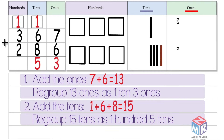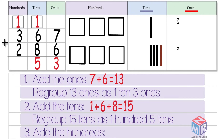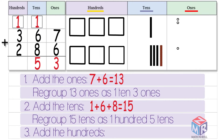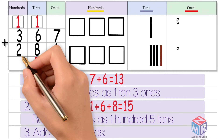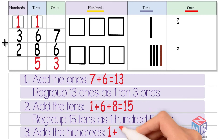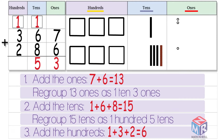Next, we add the hundreds. One plus three plus two is equal to six. So 367 plus 286 is equal to 653.